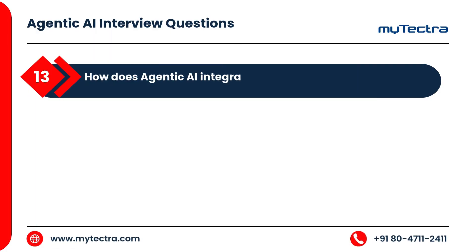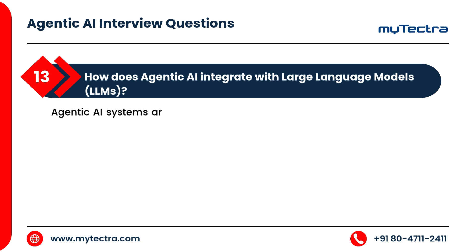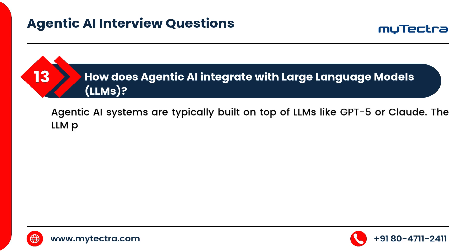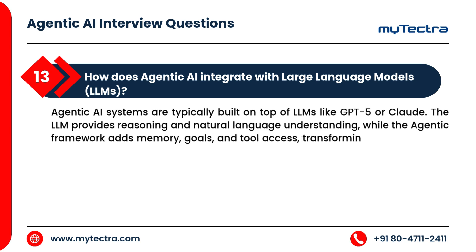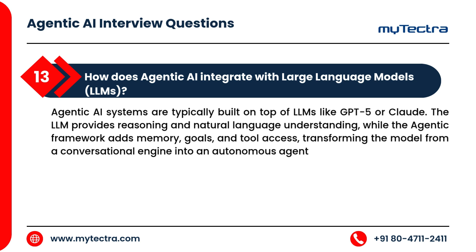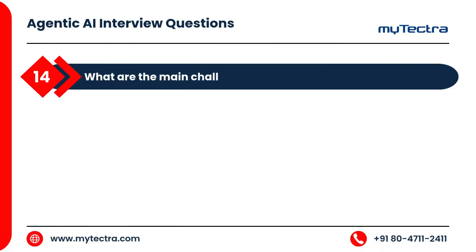How does agentic AI integrate with large language models, or LLMs? Agentic AI systems are typically built on top of LLMs like GPT-4 or Claude. The LLM provides reasoning and natural language understanding, while the agentic framework adds memory, goals, and tool access, transforming the model from a conversational engine into an autonomous agent.